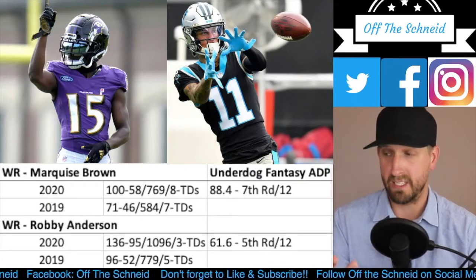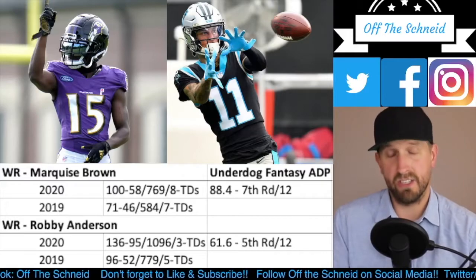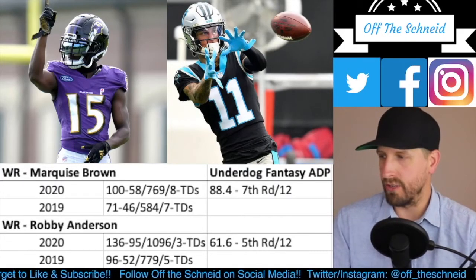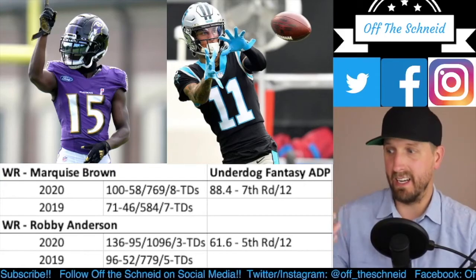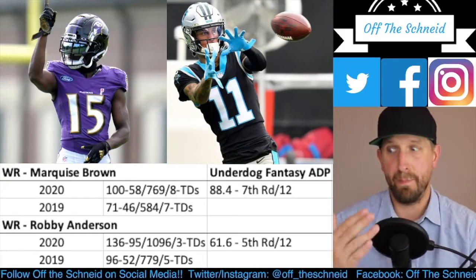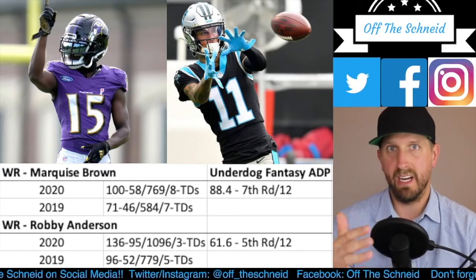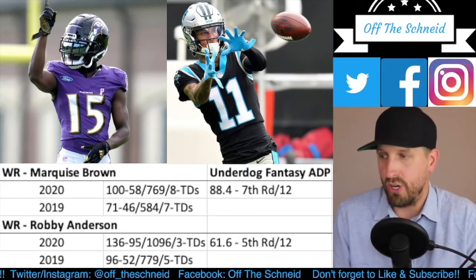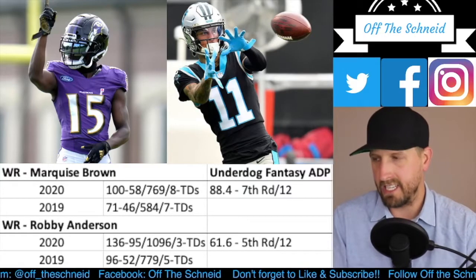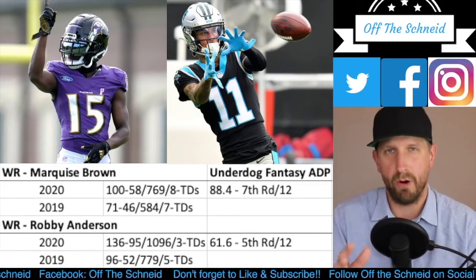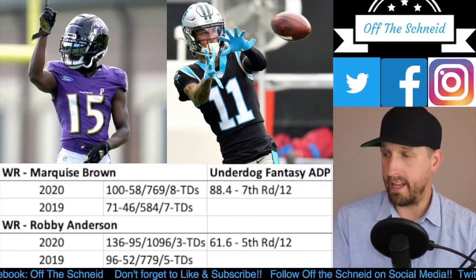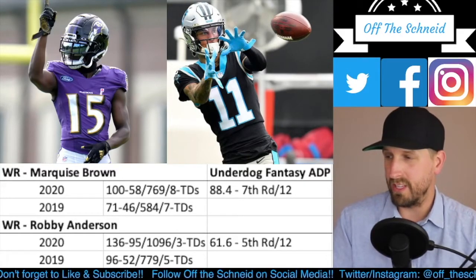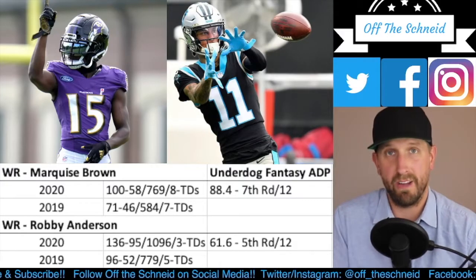In his first two seasons Hollywood Brown has 15 total touchdowns; Robbie Anderson has 8. Yards are a little different, but I expect an uptick in production from Brown and a downtick from Anderson. This one's a no-brainer — we're probably talking about a WR3, even in a 16-team league. Every day of the week give me Marquise Brown in the 7th over Robbie Anderson in the 5th. It's pretty basic and pretty obvious.